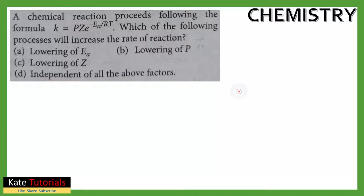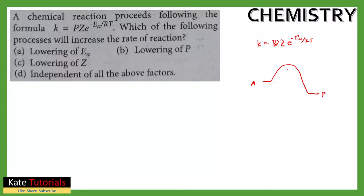So wherever the rate increases, the rate constant k also increases. Writing the equation again: k = p·z·e^(-Ea/RT). The rate increases based on activation energy. On an energy diagram, reactant A converts to product P, and the activation energy is the energy barrier — the excited transition state — between reactant and product.